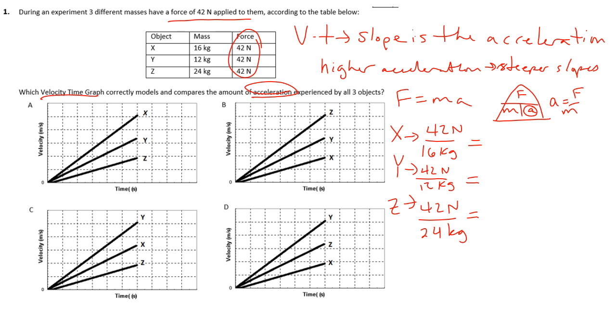So you can pull out your calculator and follow along with me. Putting 42 divided by 16 into your calculator will give you approximately 2.63 rounded, and remember that's meters per second squared. For y, we'll have 3.5 meters per second squared, and then for z, we'll have 1.75 meters per second squared. So those are our three.